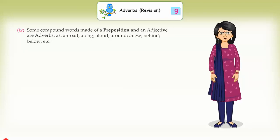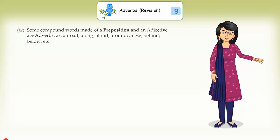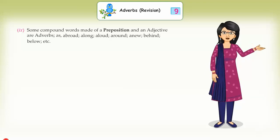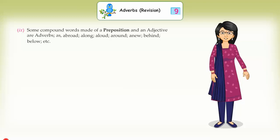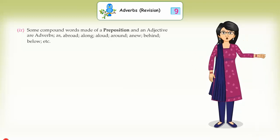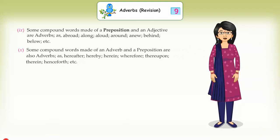(9) Some compound words made of a preposition and an adjective are adverbs. Examples: abroad, along, aloud, around, anew, behind, below, etc. (10) Some compound words made of an adverb and a preposition are also adverbs. Examples: hereafter, hereby, herein, wherefore, thereupon, therein, henceforth, etc.